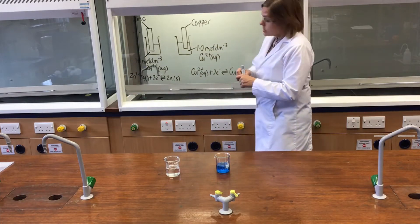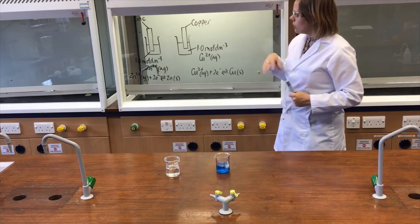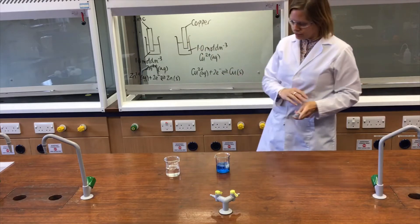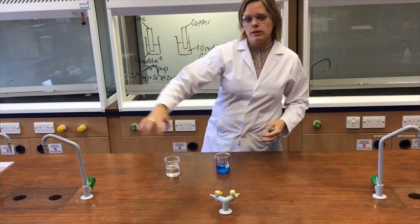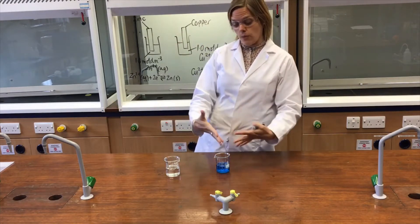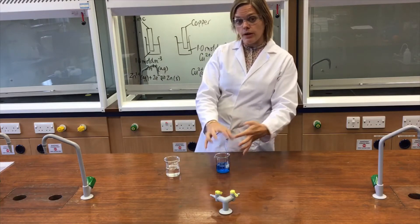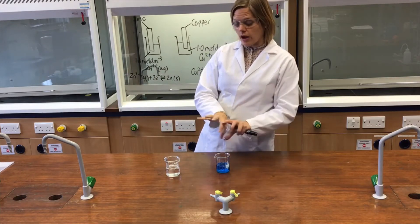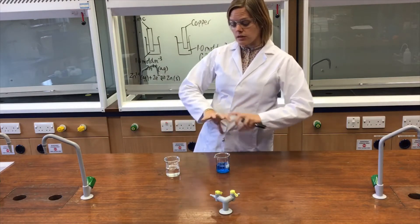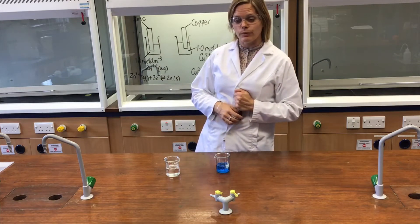Each of these two beakers represents what we call a half-cell. This equilibrium is one half-cell; it's not connected in any way to the other. The other equilibrium is a different half-cell, and they are both existing completely independently at the moment.